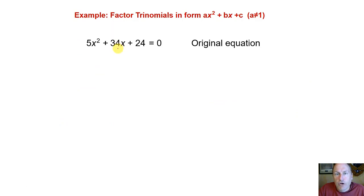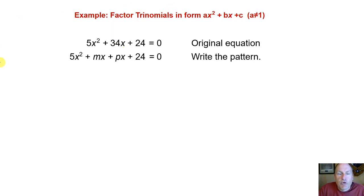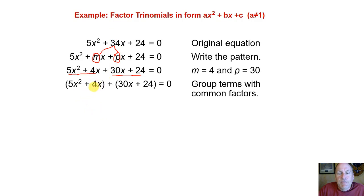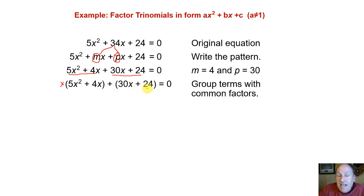Now that we know 4 and 30 are what's going to get this done, we take the original equation and break it up — substituting 4x and 30x for the 34x. So we have 5x squared plus 4x and 30x plus 24, and we factor by grouping those two parts. Notice 5x squared and 4x only share an x in common, so we take out an x. For 30x and 24, the greatest common factor is 6 — 6 goes into 30 five times and into 24 four times. So we take out an x and a 6 respectively.